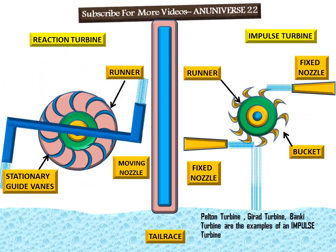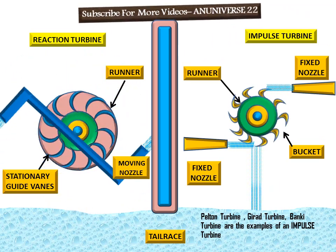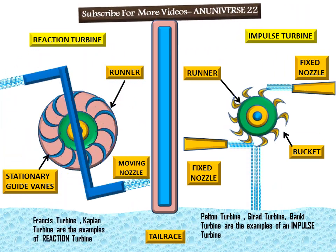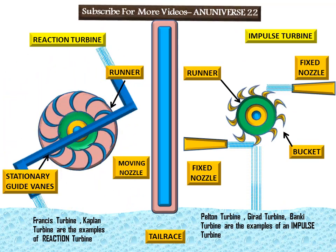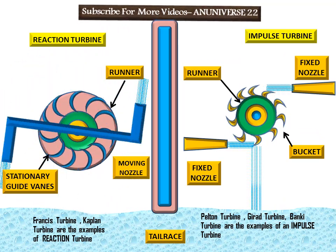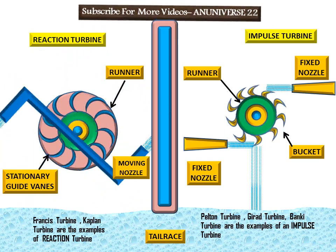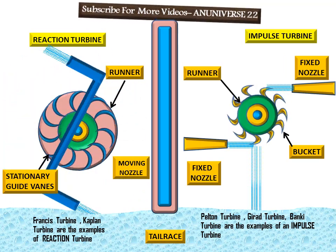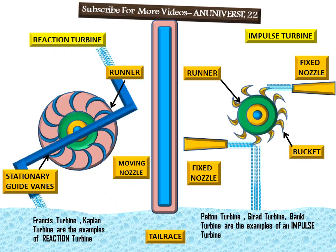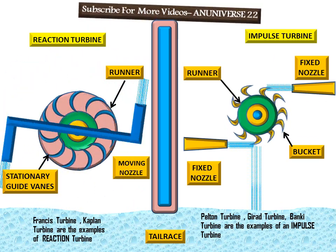Examples of impulse turbines include the Pelton turbine, Girard turbine, and Banki turbine. Examples of reaction turbines include the Francis turbine and Kaplan turbine. Today we learned the differences between impulse and reaction turbines, as well as how each type works.